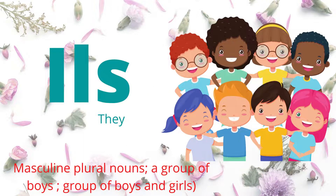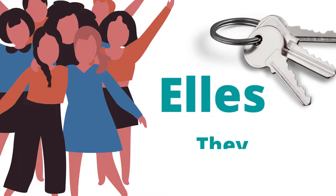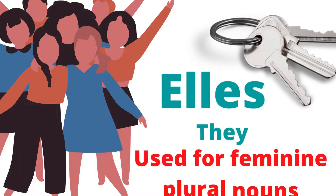Ils means they, for masculine plural nouns, and for a group of boys or a group of boys and girls. Next: Elles means they — it is used for feminine plural nouns.